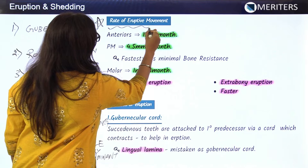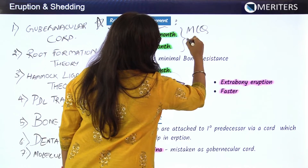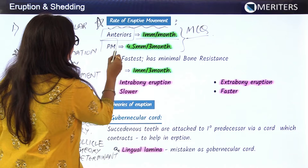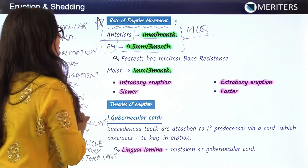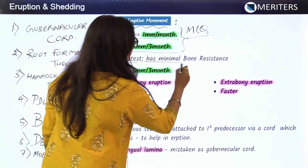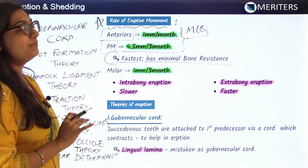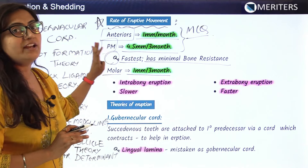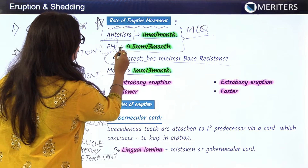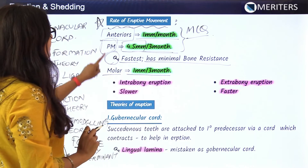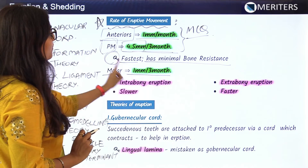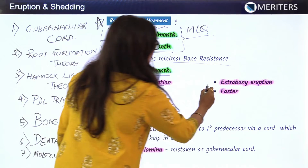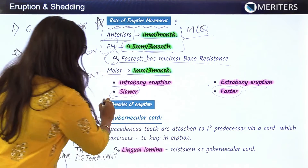Now let's see the rate of eruptive movements — these values can be the basis for an MCQ in MDS exams. For anteriors, the rate of eruptive movement is 1 mm per month. For premolars, it is 4.5 mm per 3 months — this is the fastest rate, as there is minimal bone resistance. For molars, it is 1 mm per 3 months. So out of anteriors, premolars, and molars, the fastest rate is seen in premolars. There are also intra-bony eruptions, which are slower, and extra-bony eruptions, which are faster.